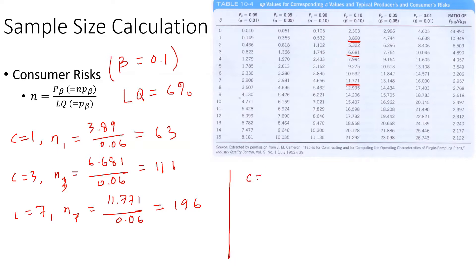For the typical consumer risk, if we calculate this with different C values, the n we get is a different value. For C equal to 3, the n is calculated as 111. For C equal to 7, n was calculated as 196. So the consumer really doesn't care which sampling plan is used because the consumer risk is the same.